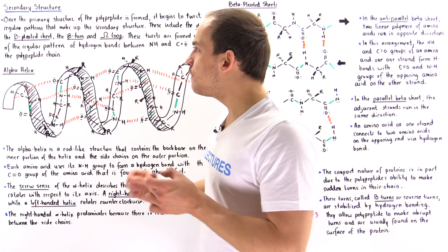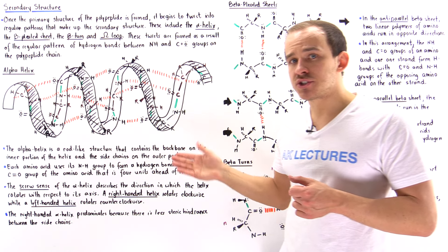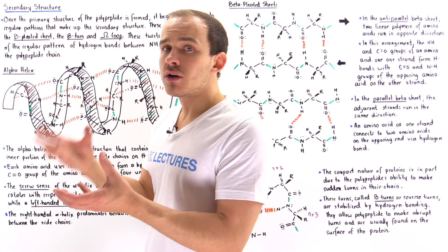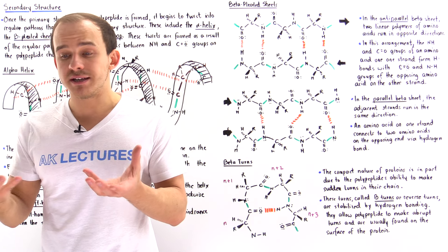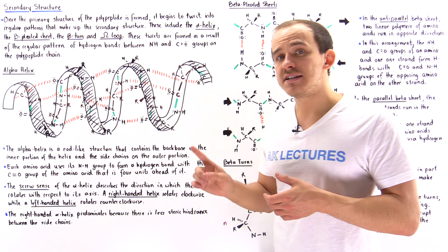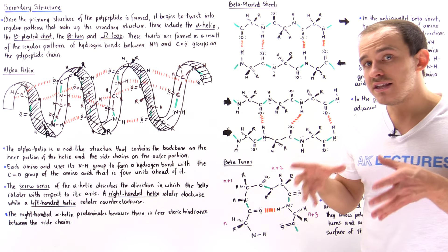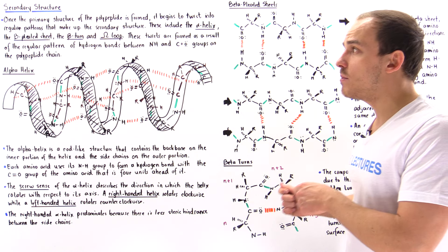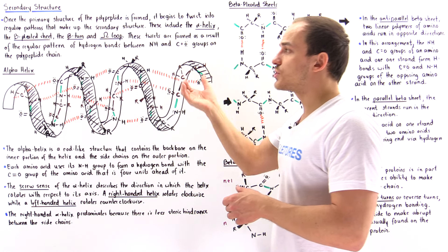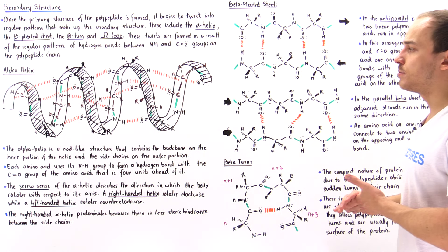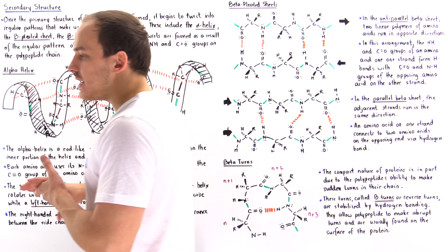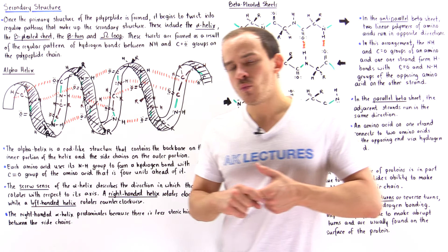Once we form these regular patterns, the question is what stabilizes these structures. It's the hydrogen bonds that exist between the amino acids in that polypeptide chain that allows each one of these secondary structures to actually exist. Let's begin with the alpha helix — what exactly is an alpha helix?